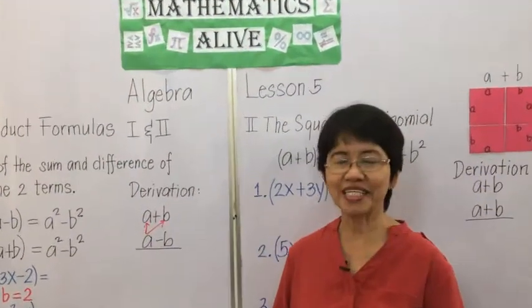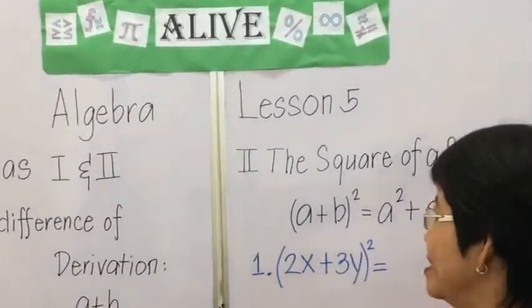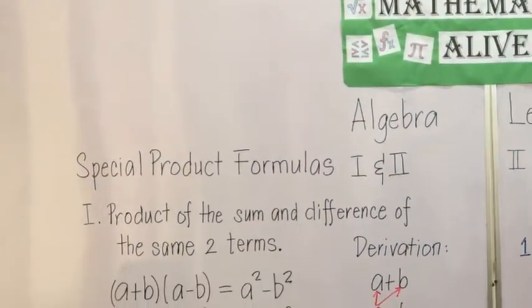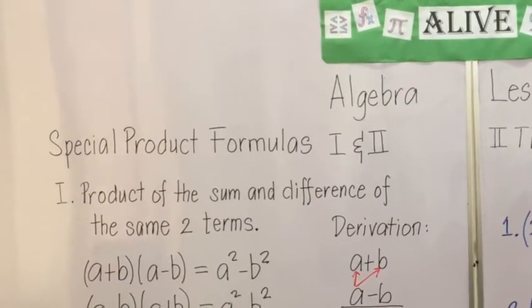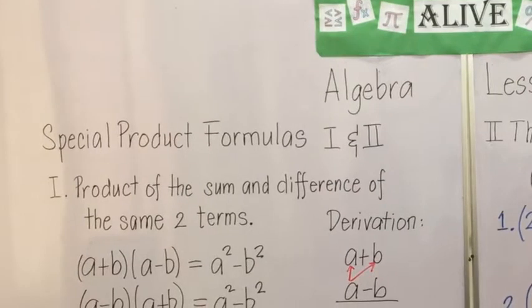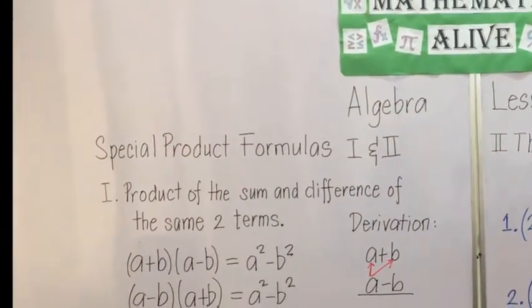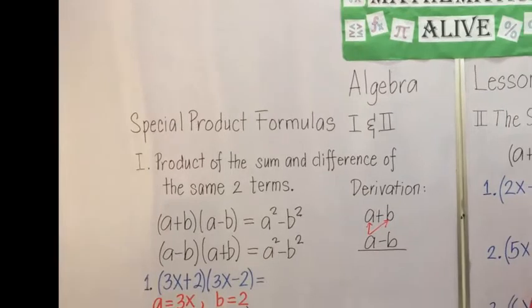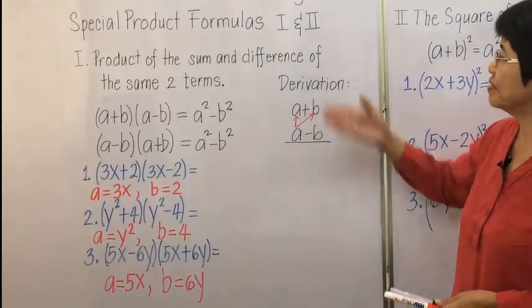This is Mathematics Alive, Algebra Lesson 5: Special Product Formulas numbers 1 and 2. We still have special product formula numbers 3 and 4 in my next video. Let's start with number one.